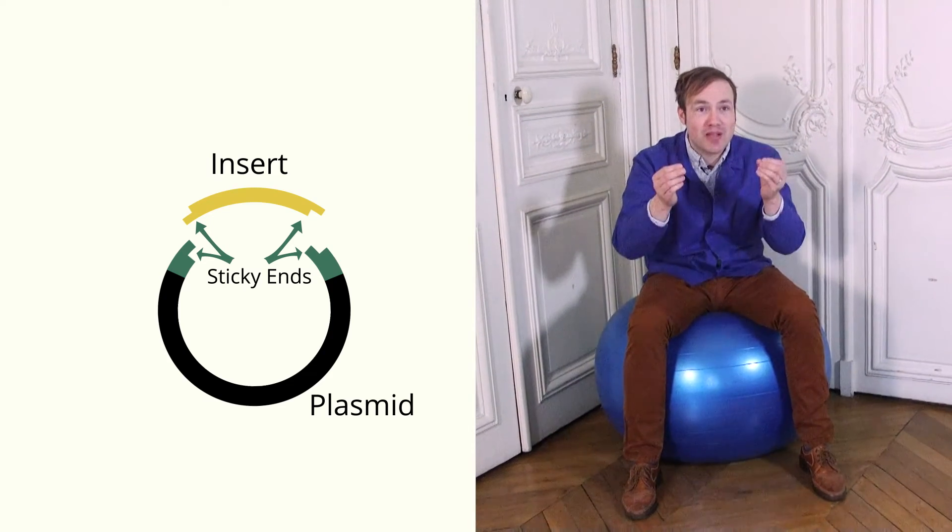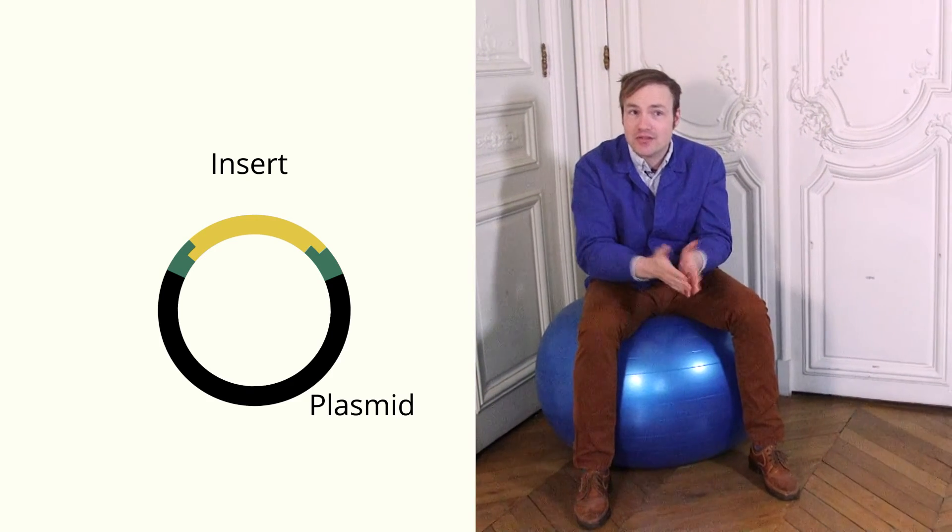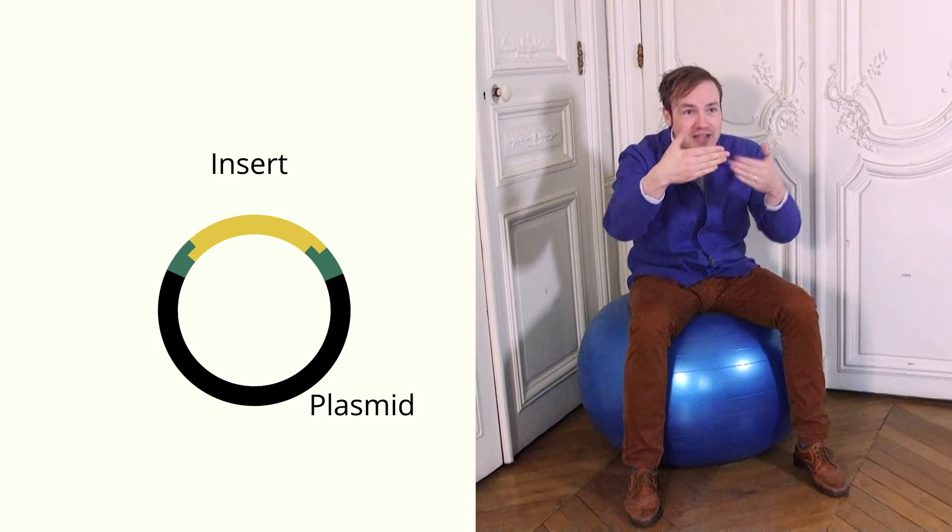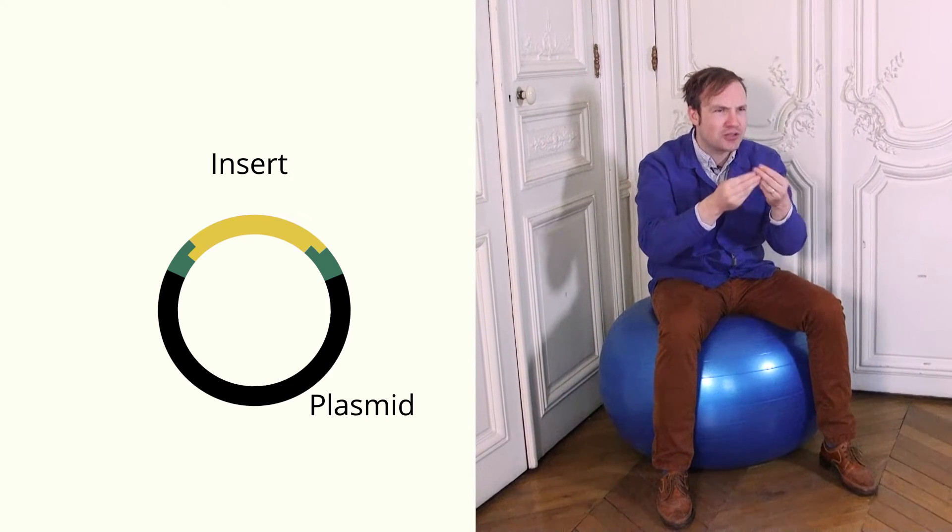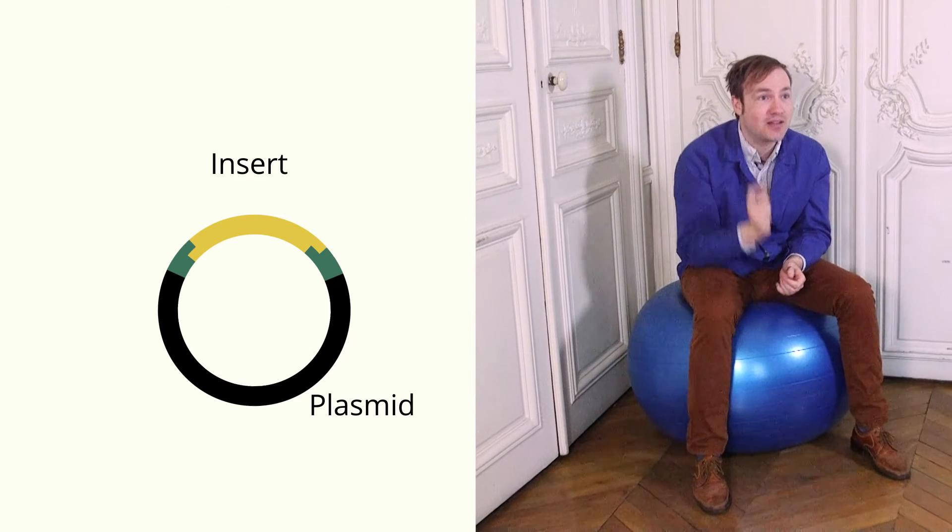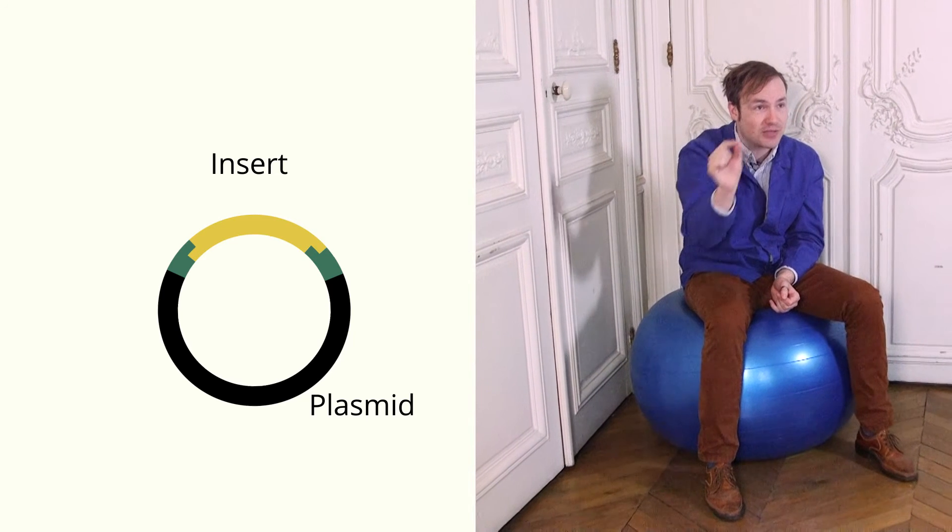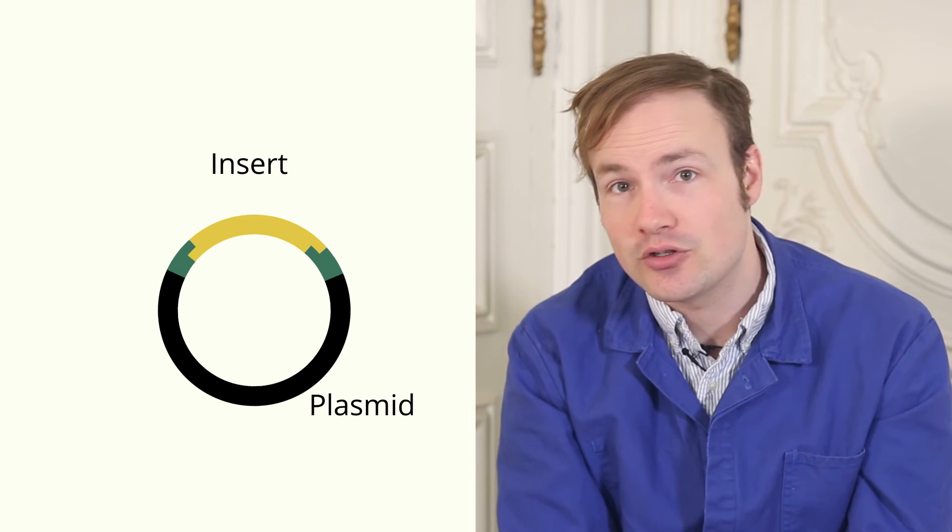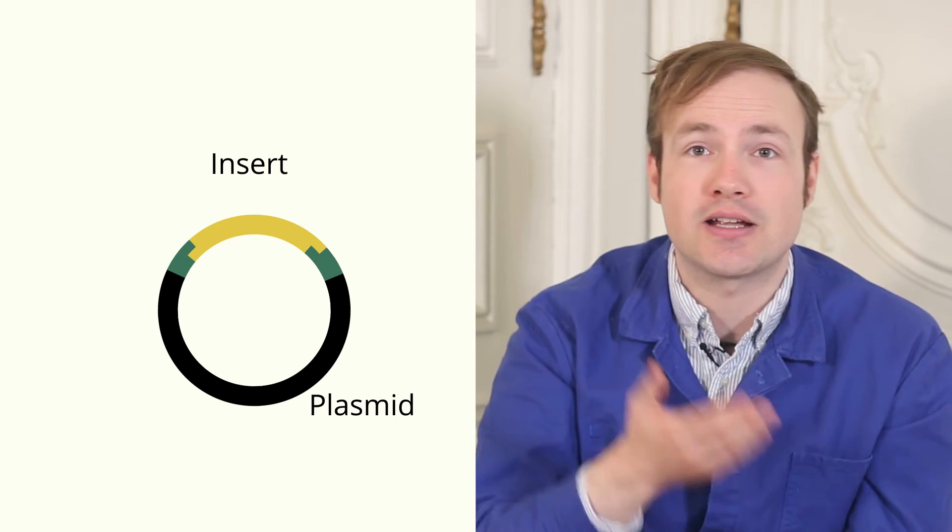Now, look what happens when we mix the digested vector and the digested insert together. The sticky ends match up. The short pieces of single-stranded DNA that stick out can bind to each other following the normal DNA base pairing rules. It's a weak interaction but it's strong enough to hold the DNA together so that now when we add a DNA ligase enzyme it can connect the two fragments together and create an intact seamless piece of DNA. This piece of DNA we can transform into bacteria just like we would a normal plasmid where it will replicate and divide just like a normal plasmid.